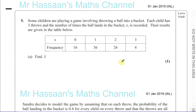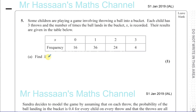Question number five from S1 January 2019 International A-Level paper — a question about probability distributions and discrete random variables. Some children are playing a game involving throwing a ball into a bucket. Each child has three throws and the number of times the ball lands in the bucket, X, is recorded. Their results are given in the table: 16 times zero balls landed, 36 times one ball, 24 times two balls, and 4 times three balls landed in the bucket.